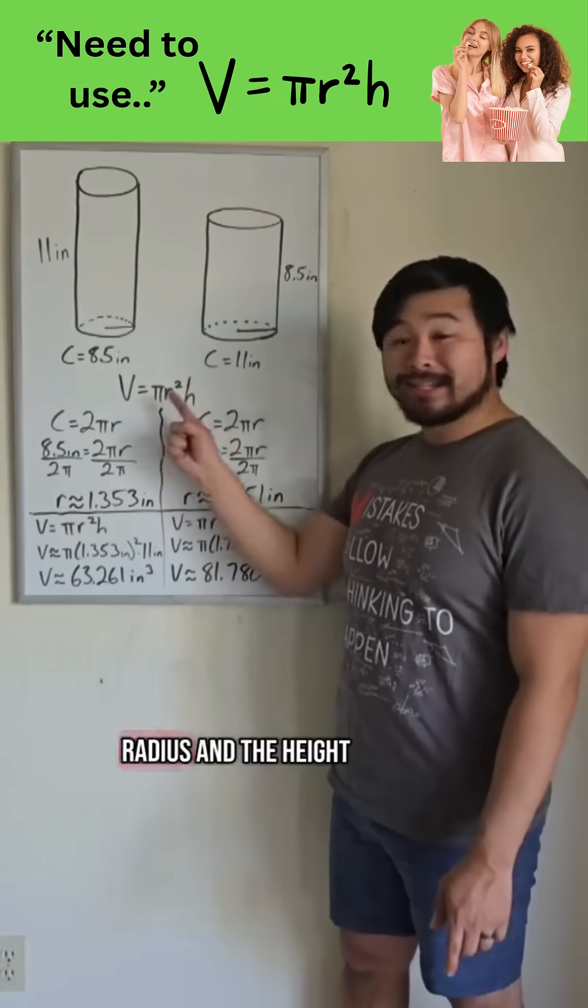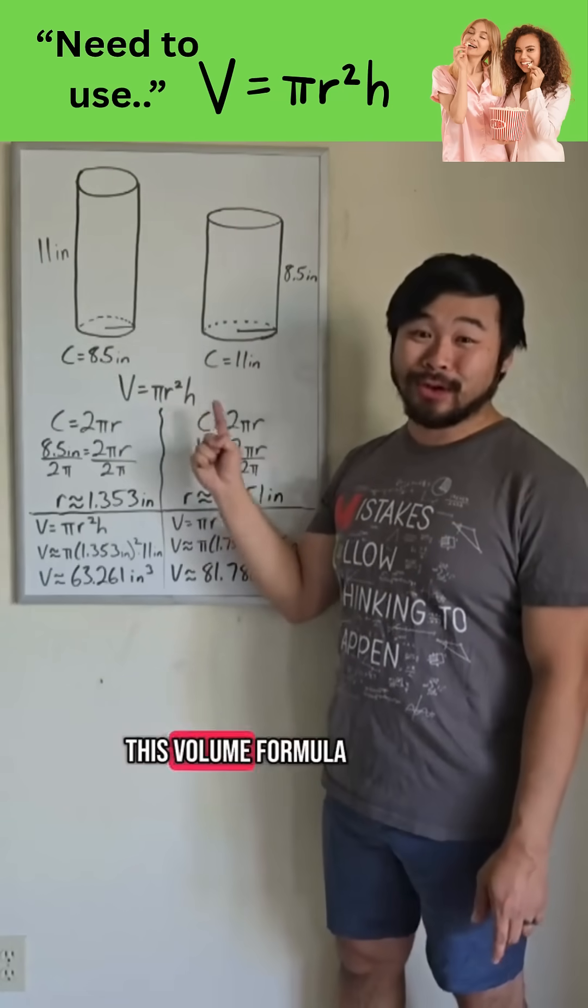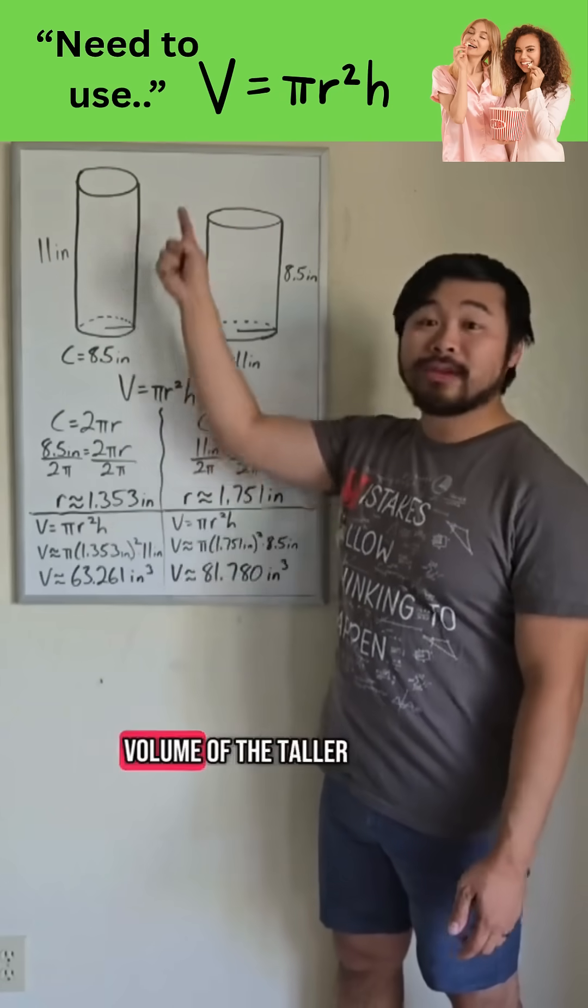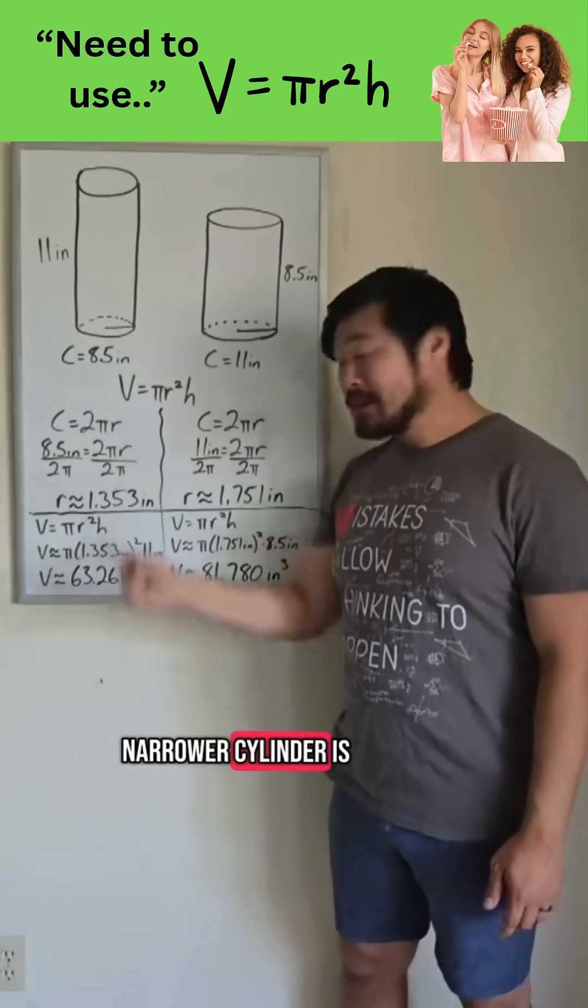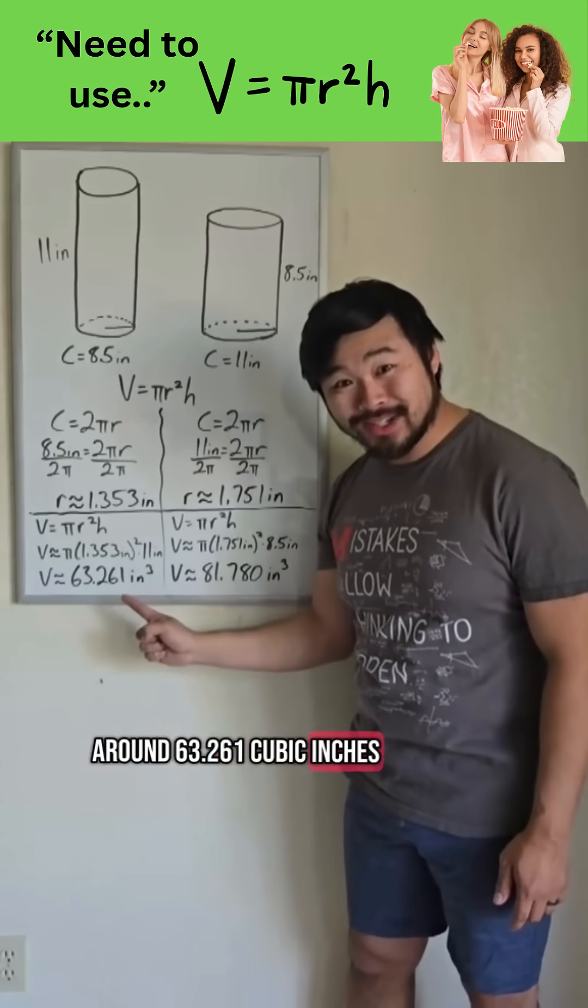So now that we have the radius and the height, we can use this volume formula. And when we do, we can see that the volume of the taller, narrower cylinder is around 63.261 cubic inches,